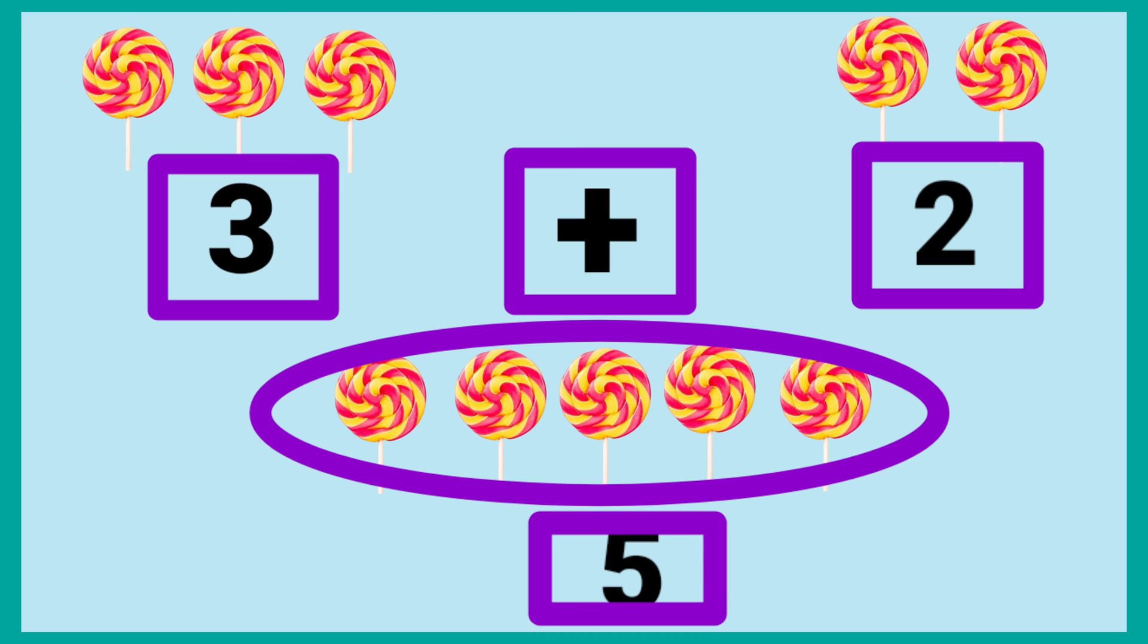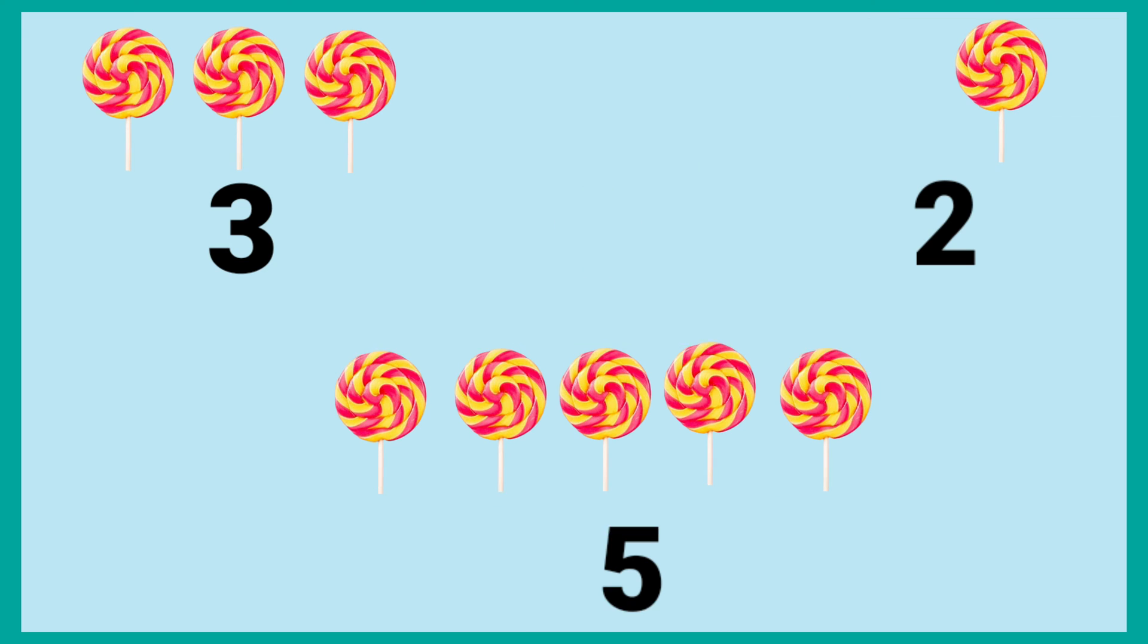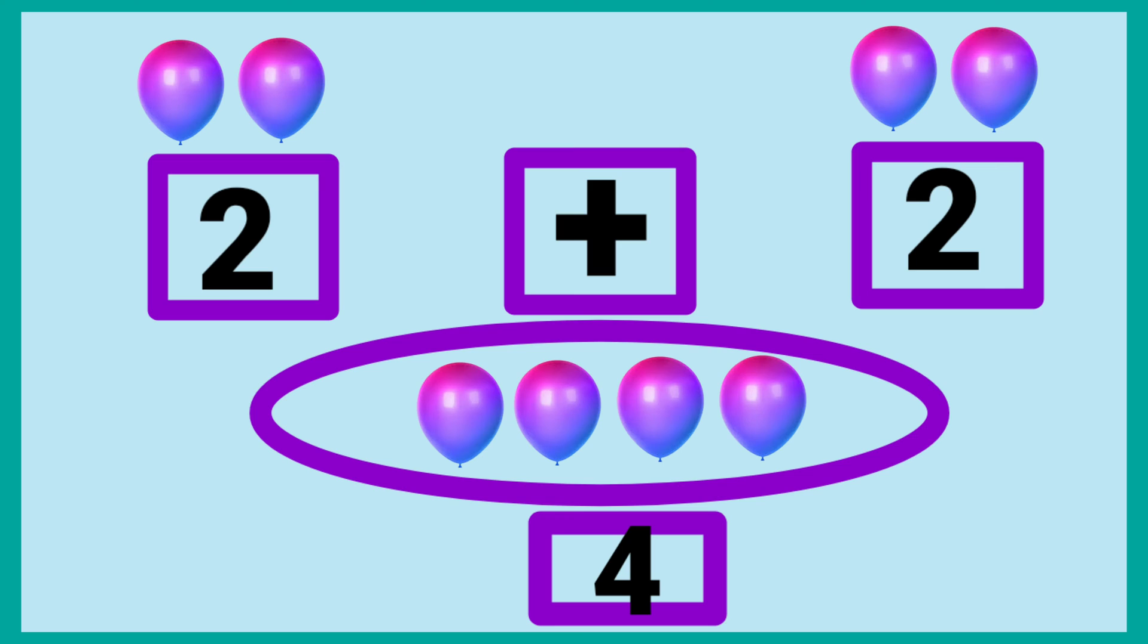It is a plus sign. Two balloons and two balloons makes four balloons. Means two plus two is equal to four. Two plus two is equal to four.